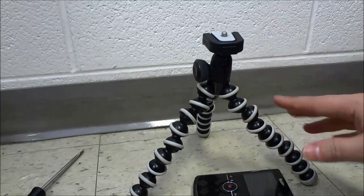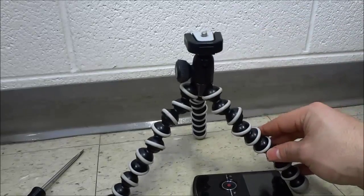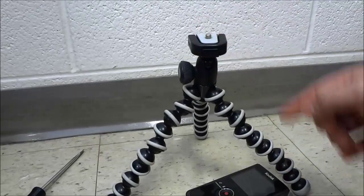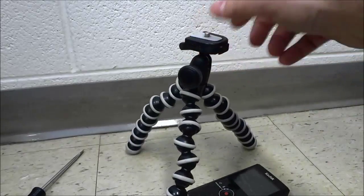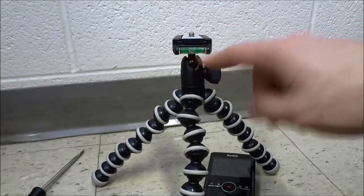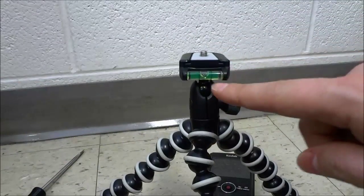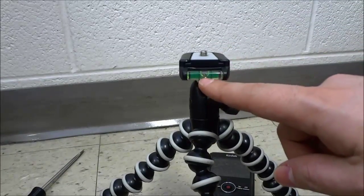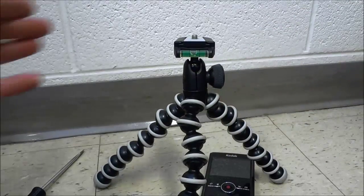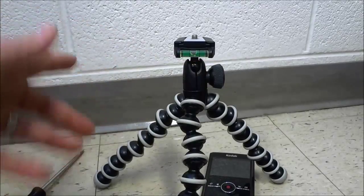I'm going to go over some of the features and functions of this flexible tripod. Let's start at the top and work our way to the bottom. You can see there's a bubble level on the tripod right here. That allows you to know that your camera is level and is great for making sure you're getting nice level shots.